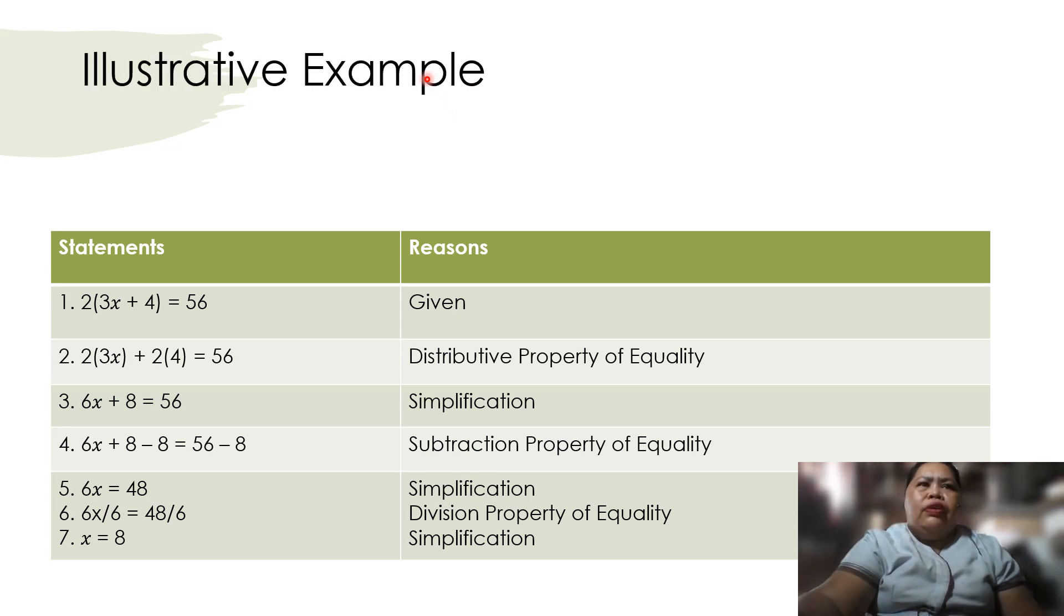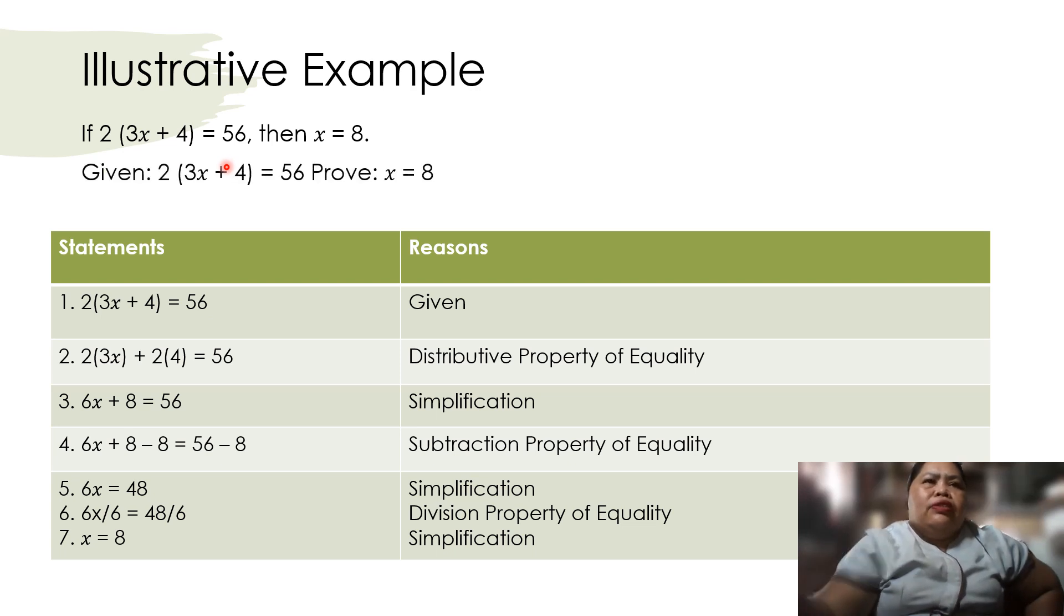So we have here an illustrated example. If 2 times the quantity 3x plus 4 is equal to 56, then x is equal to 8. Given: 2 times the quantity 3x plus 4 is equal to 56. Prove that x is equal to 8.